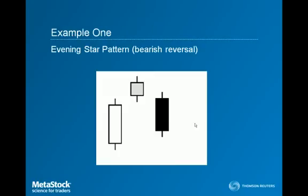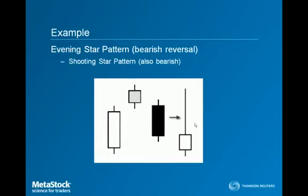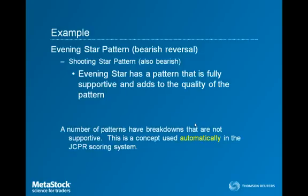On the screen I've placed an evening star pattern. This is typically a bearish reversal pattern. If I took the open, the high, the low, and the close of this three-bar pattern and condensed that into a single candlestick, I would have a shooting star pattern. Both of these are bearish patterns. The fact that these are both bearish patterns means they're fully supportive of one another.